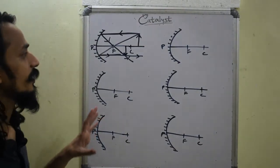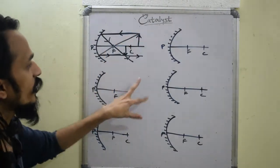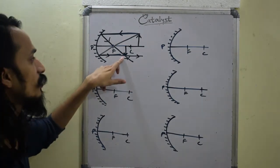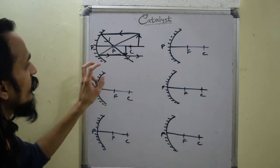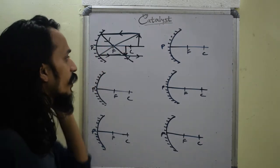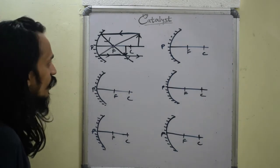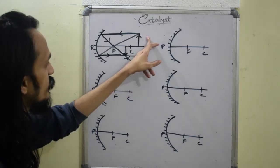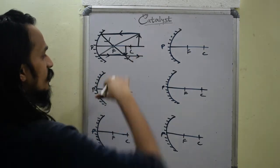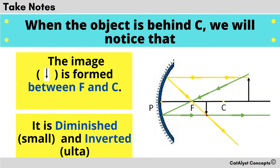This is how you draw a ray diagram. You take two rays coming from the tip of the object and you see where the reflected rays will meet according to the rules. Keep in mind that whenever you're drawing these diagrams, the distance between these two and these two should be the same or else your diagram might come wrong. This is the first case: object behind C, image in between F and C. It is slightly diminished and it is inverted.